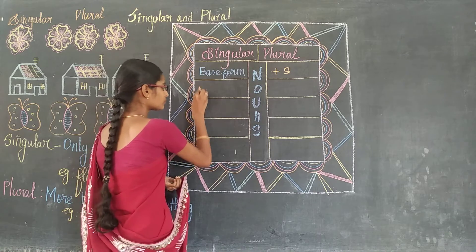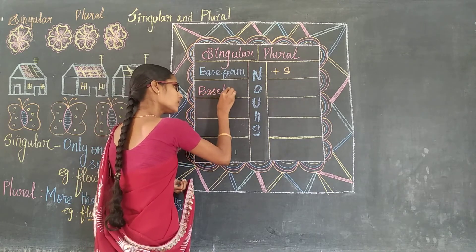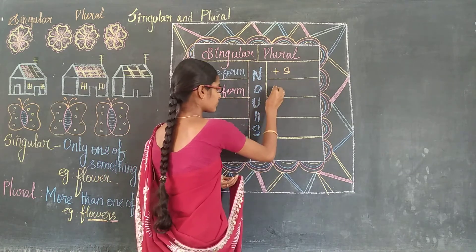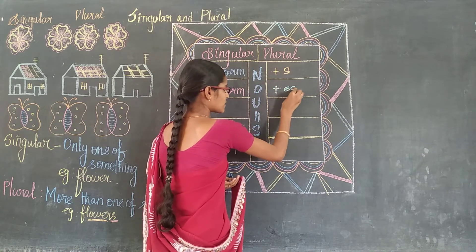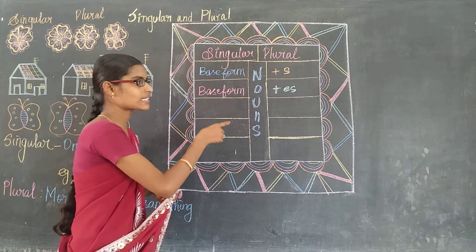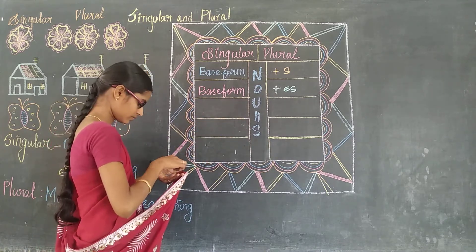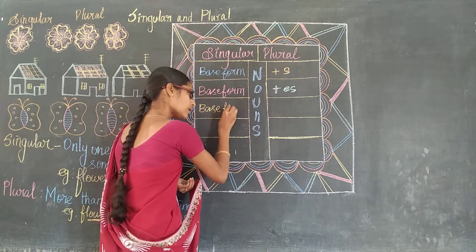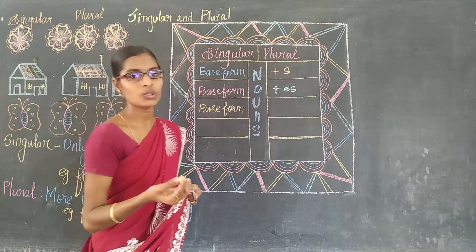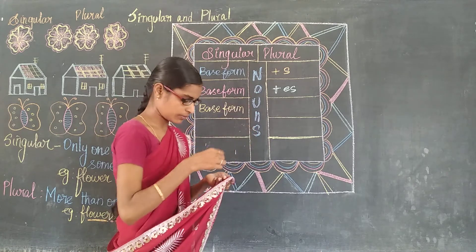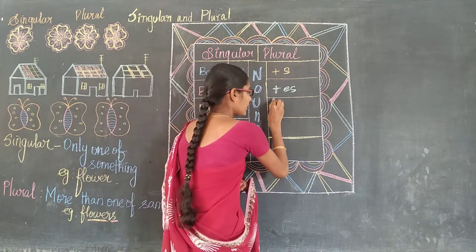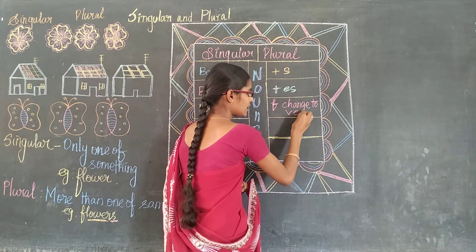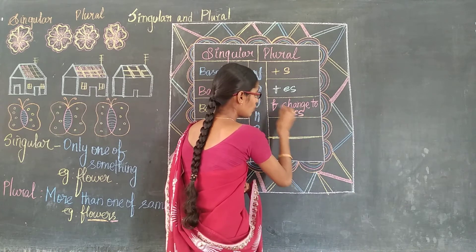And the second condition is base form plus 'es'. And the third condition: base form — here we are not going to add anything. We are going to change something. F changes to VES — if the singular noun ends in F, we have to change the F into VES. That is our third rule.